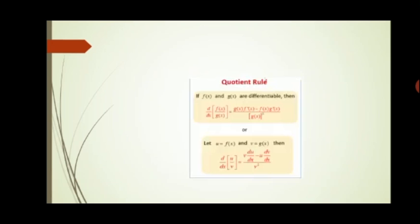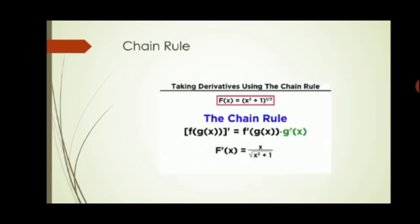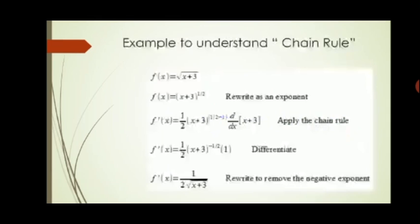Now let us take up the chain rule in detail with an example. The function is (x² + 1)^(1/2). This is just like x^n where in place of x we have (x² + 1) and n = 1/2. So the derivative is (1/2)·(x² + 1)^(1/2 − 1) and by the chain rule we also multiply by the derivative of (x² + 1), which is 2x. The 2 simplifies, giving the final answer x / √(x² + 1). Students will better understand these rules by solving many practice questions.